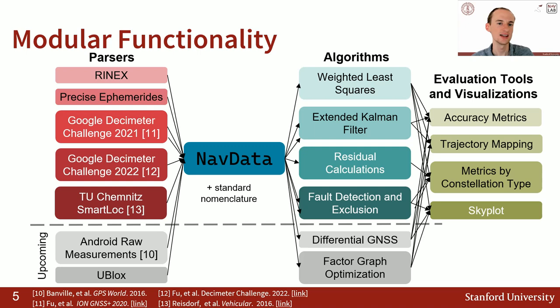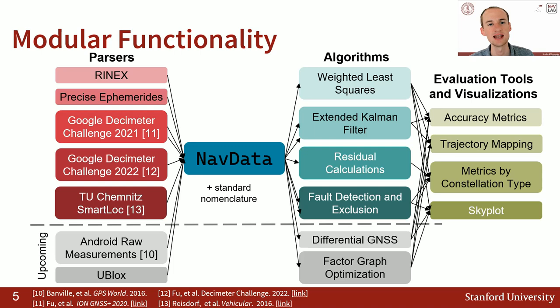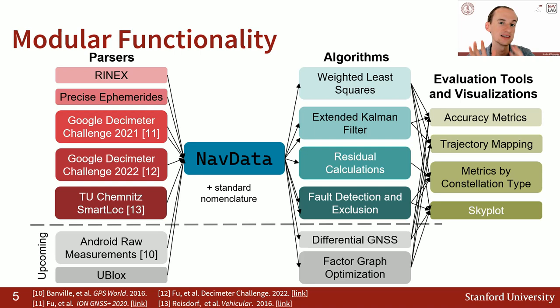Here is a representation of the existing functionality that we already have, as well as some of what we'll be doing in the near future. On the left side, we have functionality to go from multiple different types of data sources or GNSS datasets to be able to quickly parse through that data. All of those different data types are parsed into a custom Python class that we call NavData.